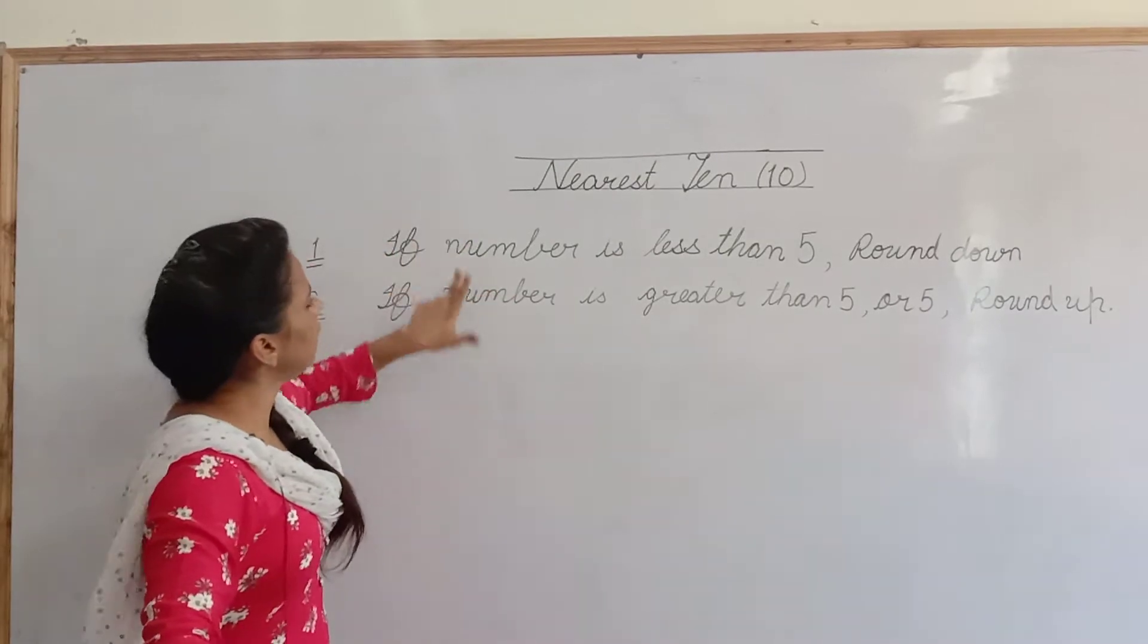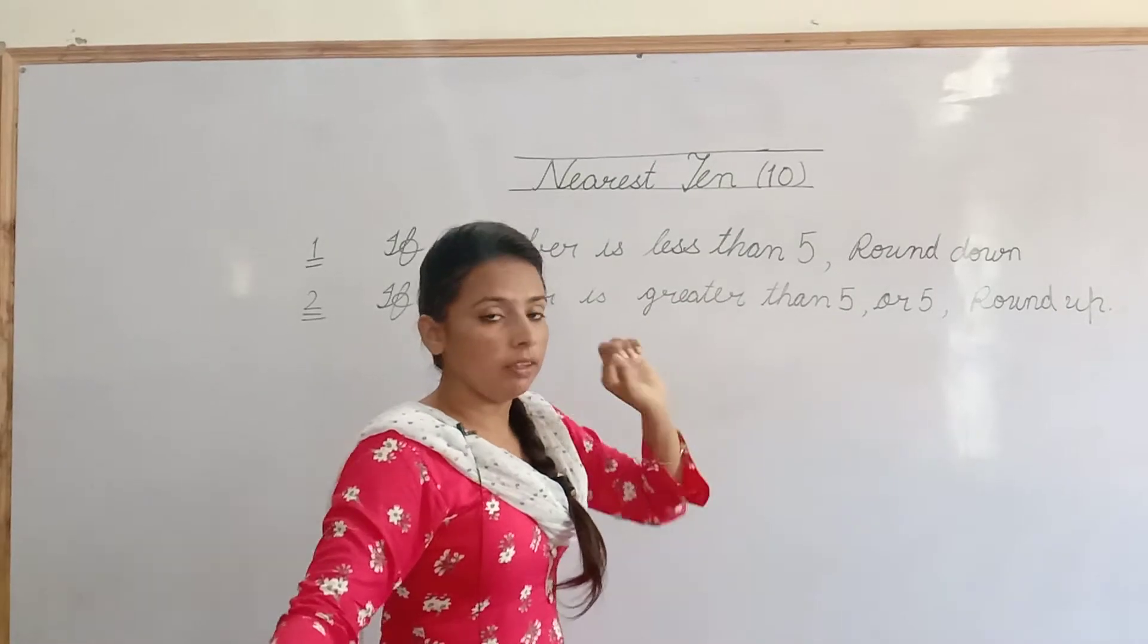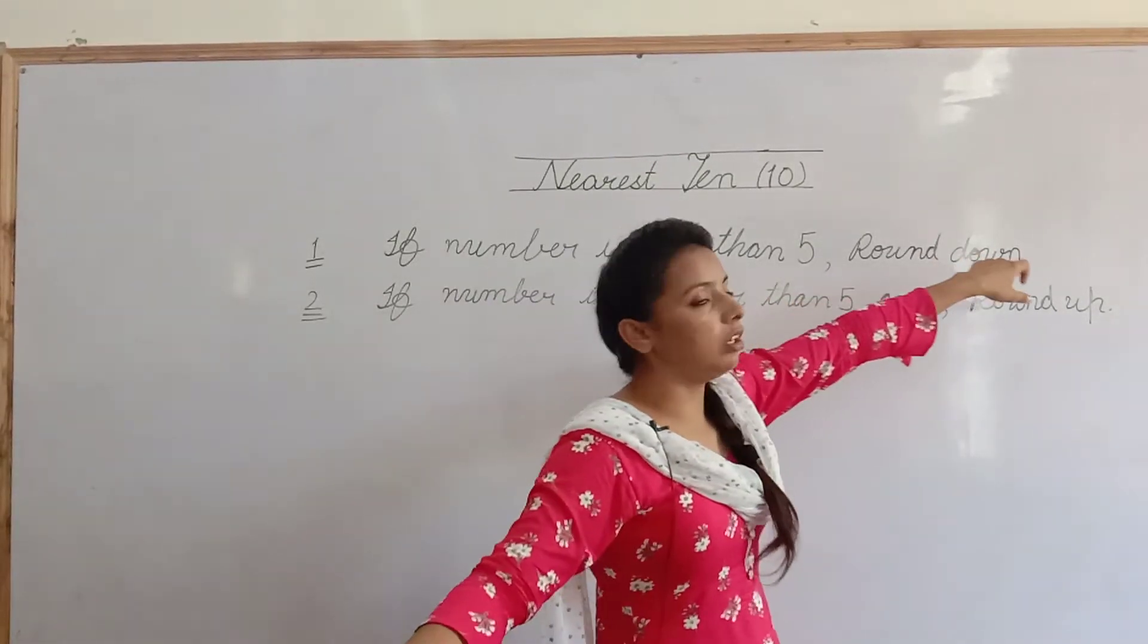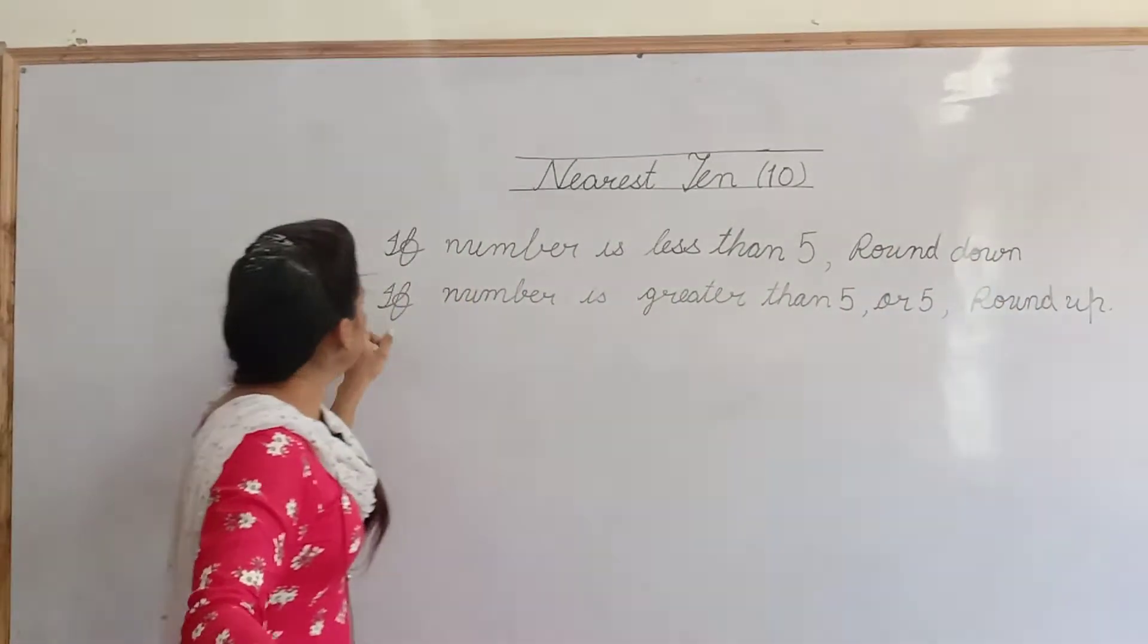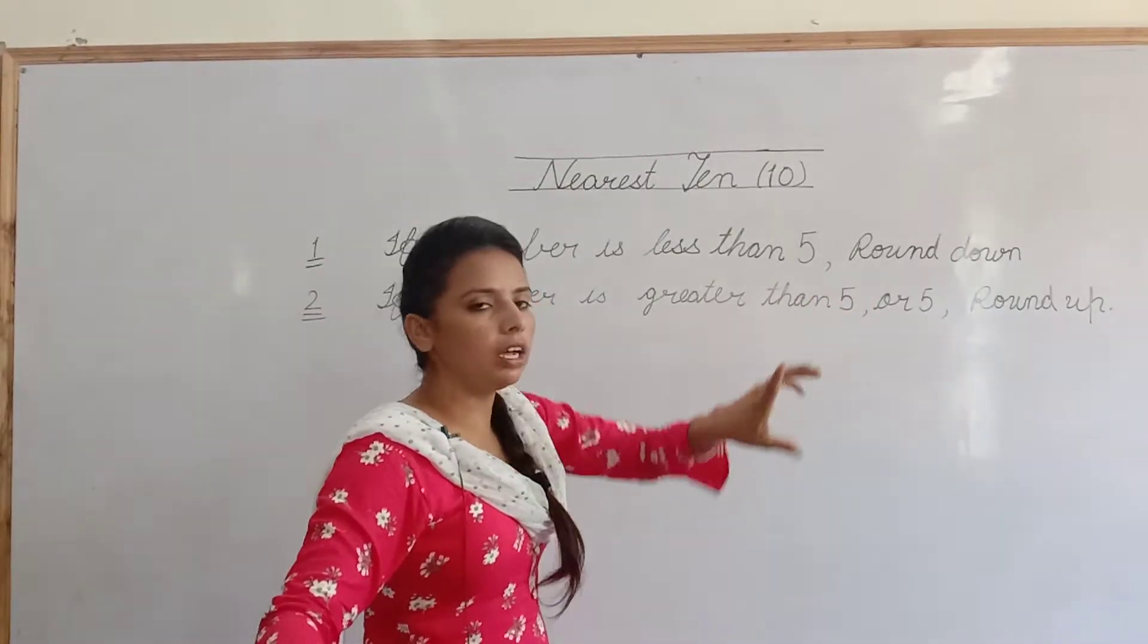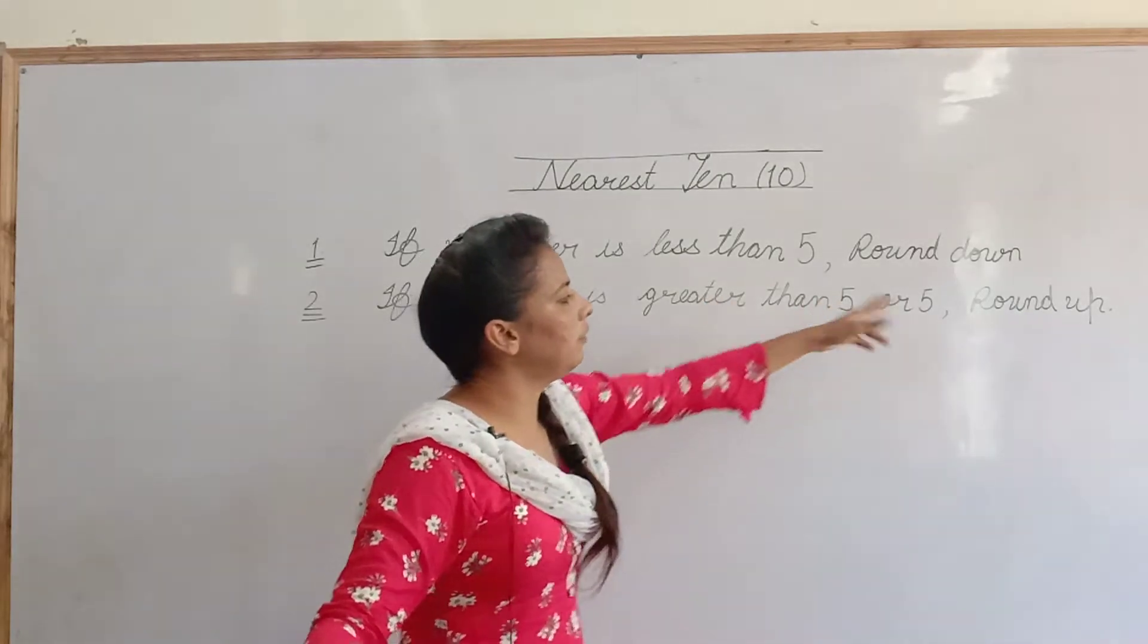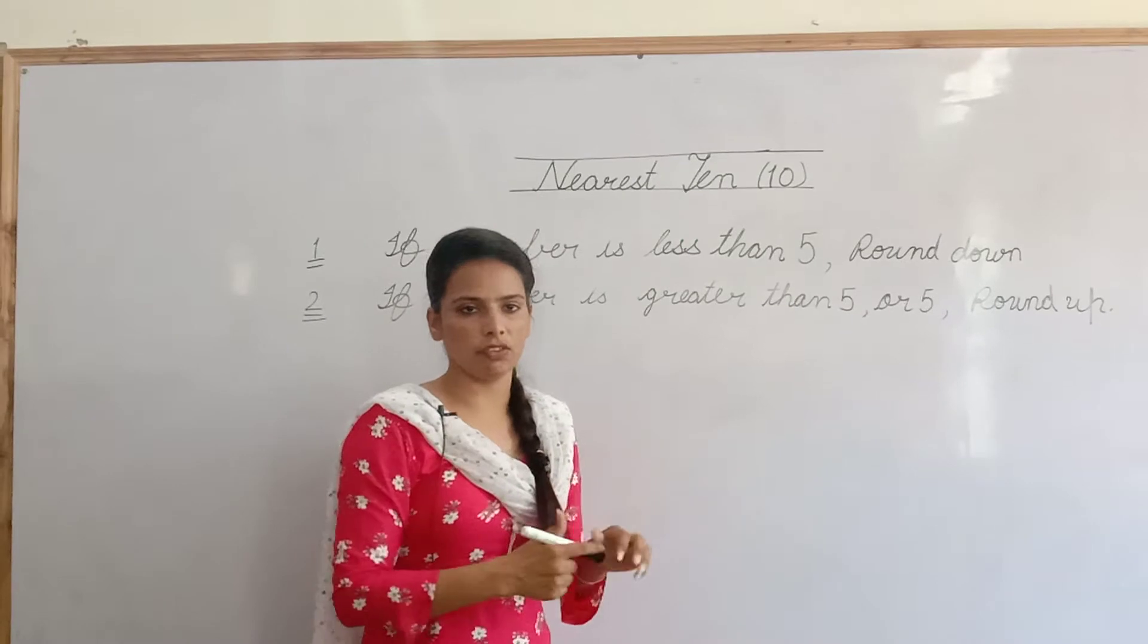So keep these two rules in your mind. If number is less than 5, less than 5 means 5 سے چھوٹا ہے. Then we will round down, means پیچھے valley desert کے nearest رہے گا. But if number is greater than 5 or 5, اگر number 5 ہے, یہ greater than 5 means 5 سے بڑا ہے. Then we will round up, means next digit کے nearest رہے گا.